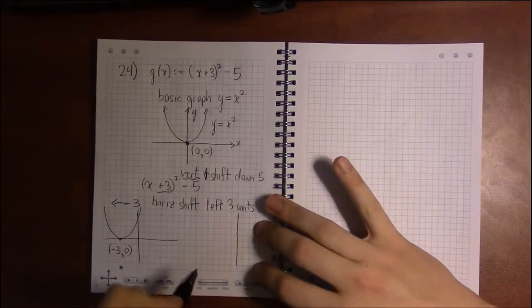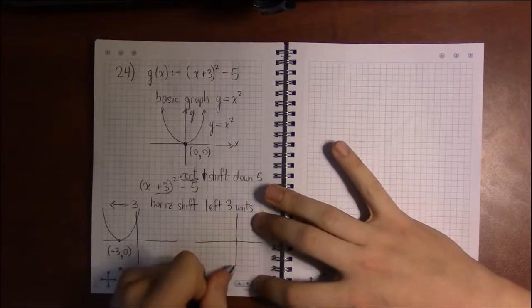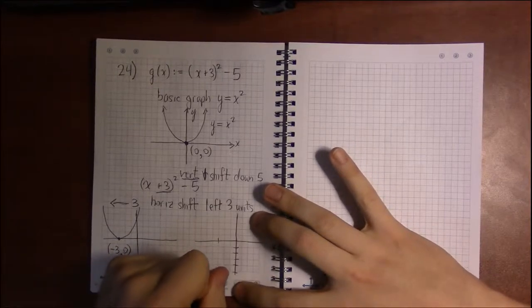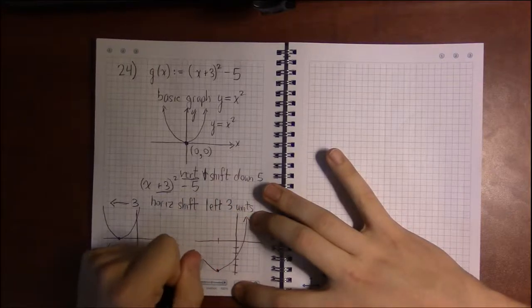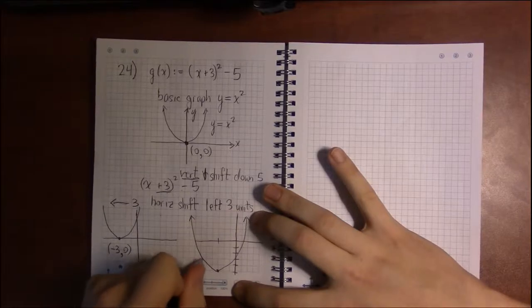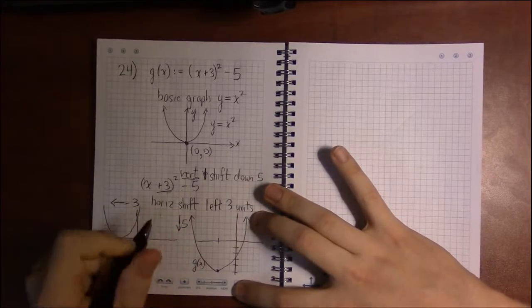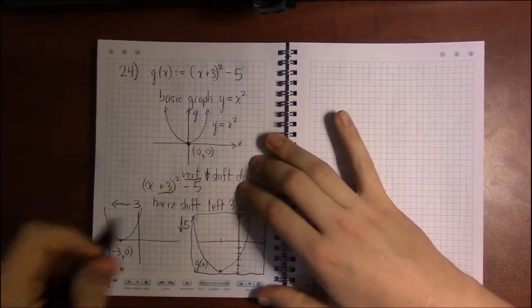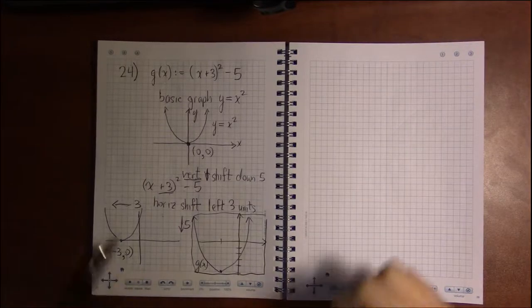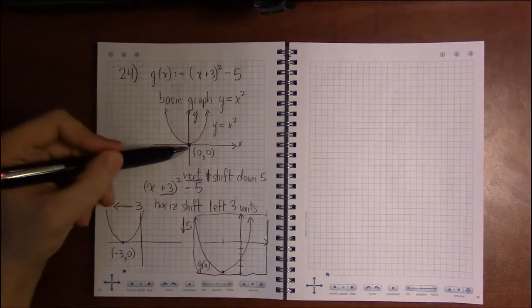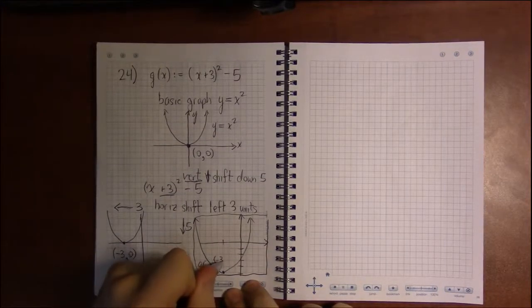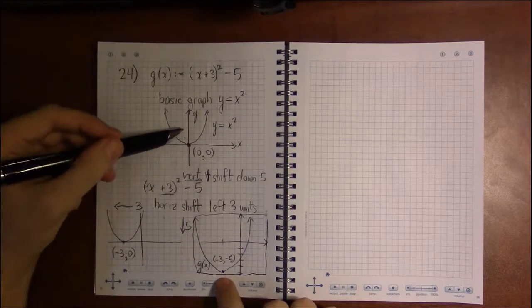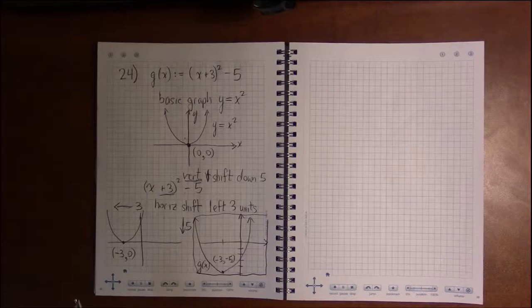So this would be the point minus 3, 0. That's left 3. And then we shift this down 5: 1, 2, 3, 4, 5. We'll be sitting at this point. This is g of x. We shifted left 3, and then down 5. You can do them one at a time if you need to. Or if you like, you could have done it all at once. If you could see that this was going to sit at the point minus 3, minus 5, you could have just gone straight from here to here.